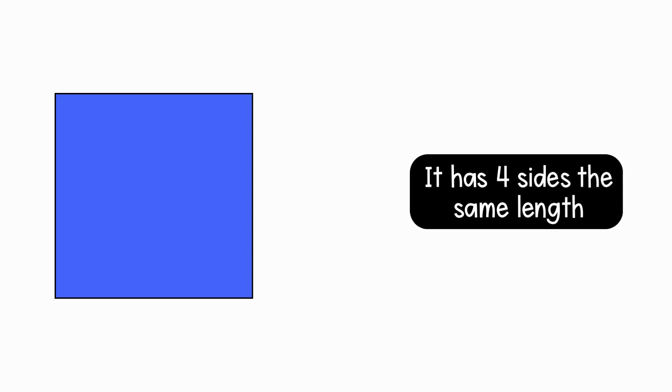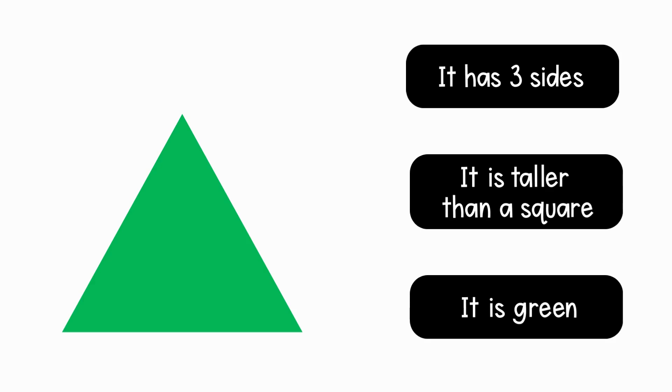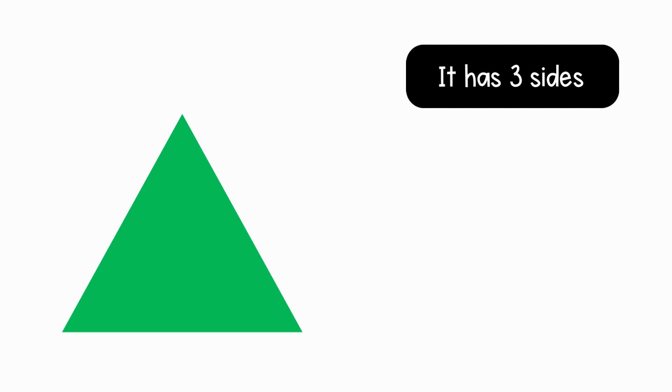The color and size don't help in determining the shape. Here's another one. Which of these is a defining attribute for this triangle? It has three sides. It is taller than a square. It is green. It has three sides is the defining attribute.